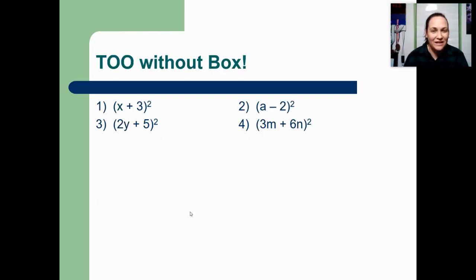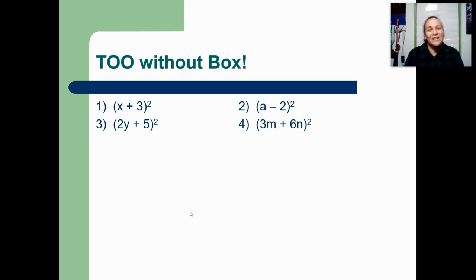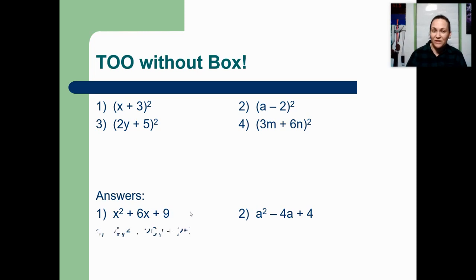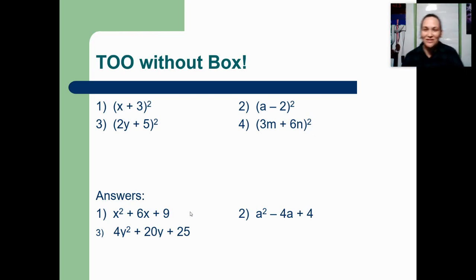Why don't you try some of these on your own? Here are 4 problems — go ahead and try them. You can write out the middle step or just think it in your head and write the answer as you finish it. Pause, and when you're done we can check your answers. Here are the first two answers: x squared, then 3x doubled is 6x, then 3 squared is 9. On the second one: a squared, then 2a doubled is 4a — notice the minus sign — and 2 squared is 4. Number 3 was trickier: 2y squared turns into 4y squared; 2 times 5 is 10 and doubled is 20y; then 5 squared is 25. For that last one, there's a question in this video — make sure to answer it.